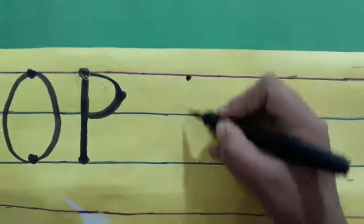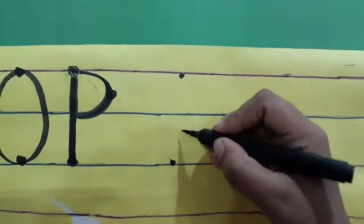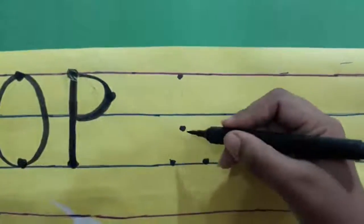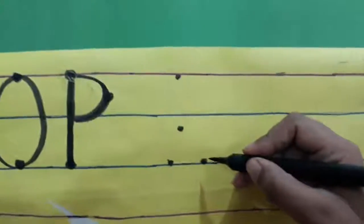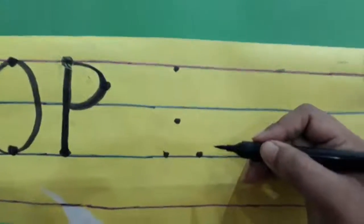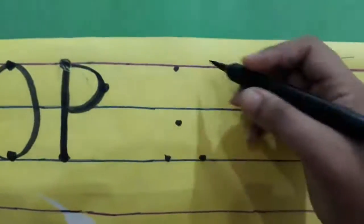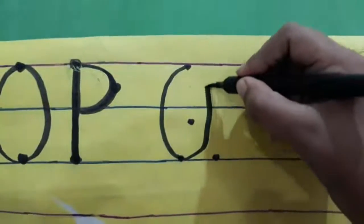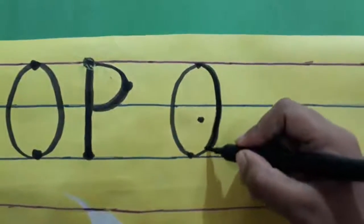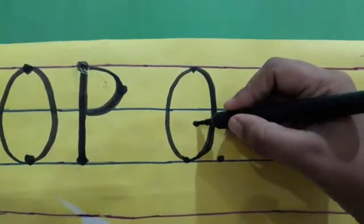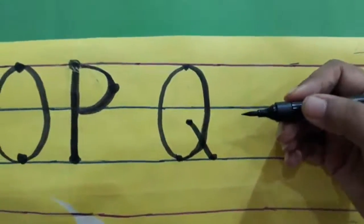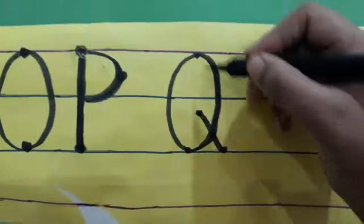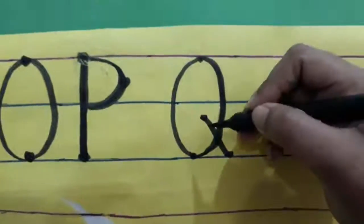First we will be putting four dots. One, two, three, four. So for Q we need to put four dots. How we will be making Q for queen? First we will be making O — a circle. And then we will put one slanting line here. So our Q for queen is ready. How you will make it: circle and then slanting line.